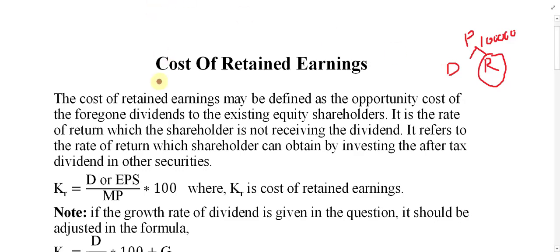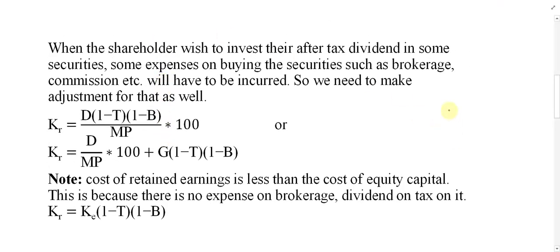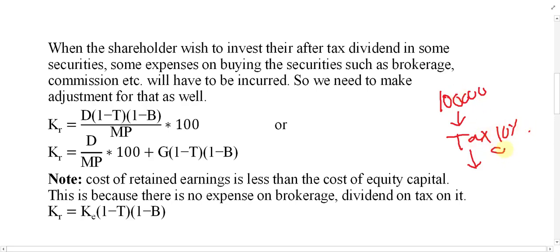For example, suppose you received 1 lakh from the company as dividend. First, you have to pay tax to the government — say tax is 10%, so 10,000 goes to the government and 90,000 remains. Then when you go to invest in the market, you have to pay brokerage fee — say 5%, so 5,000 is deducted — leaving you with only 85,000 available for actual investment.